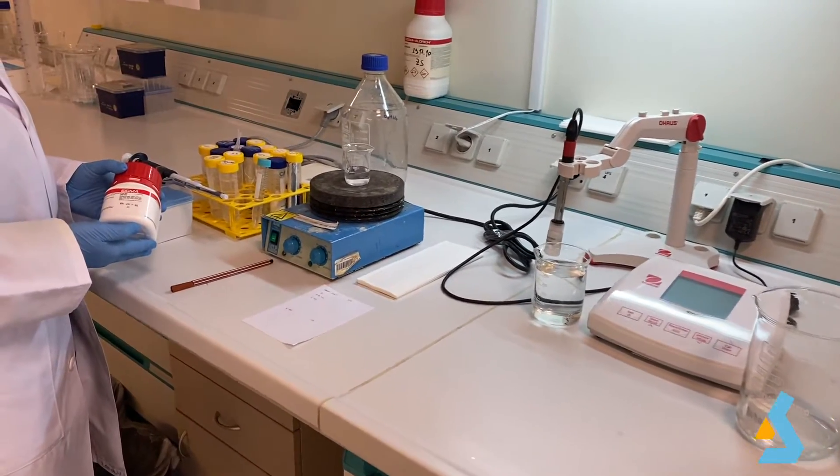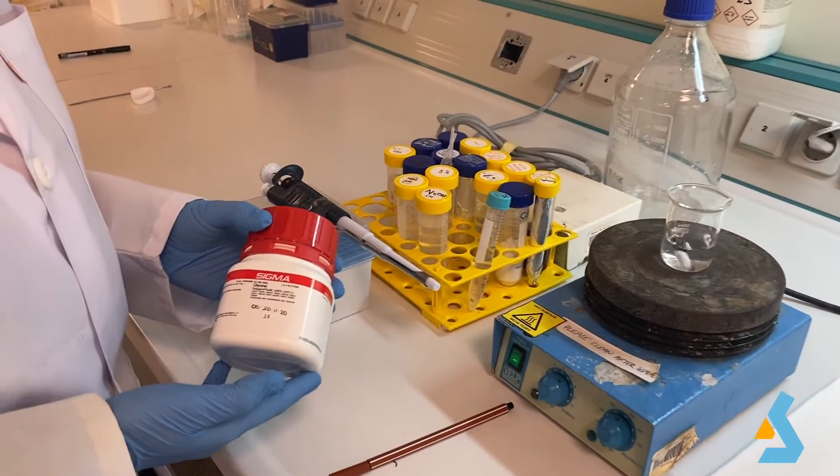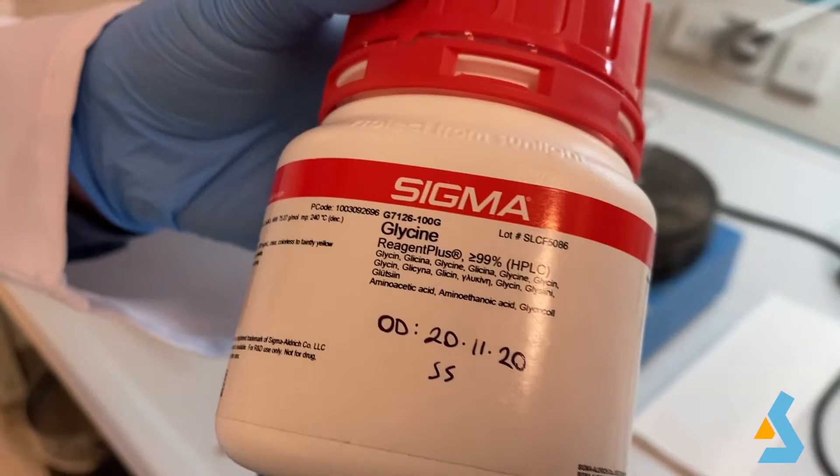Now, we will show you how to plot a titration curve to identify amino acids based on their pKa values. In this video, the amino acid we used was glycine.